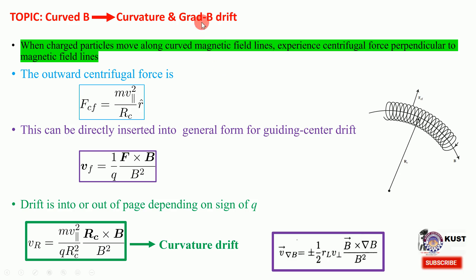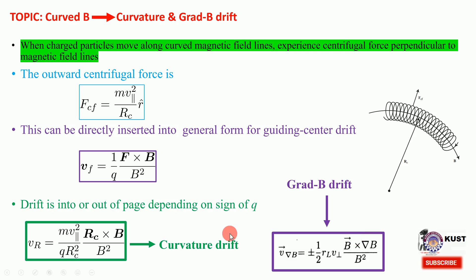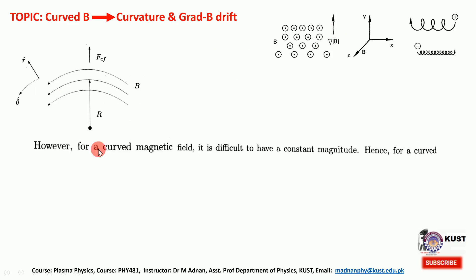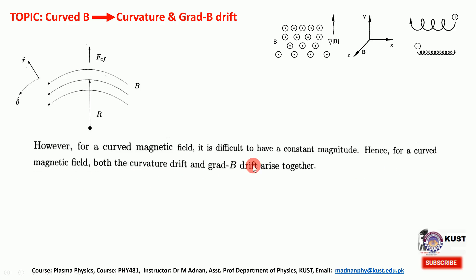The previous lecture summarized the grad-B drift. These two drifts — curvature drift and grad-B drift — arise when we have curvatures in the field lines and a gradient in the strength of the magnetic field, respectively. Practically speaking, these two drifts arise at the same time, since it is not possible to have curvedness in the magnetic field while the field lines remain uniform. Hence for a curved magnetic field, both curvature and grad-B drift arise together.